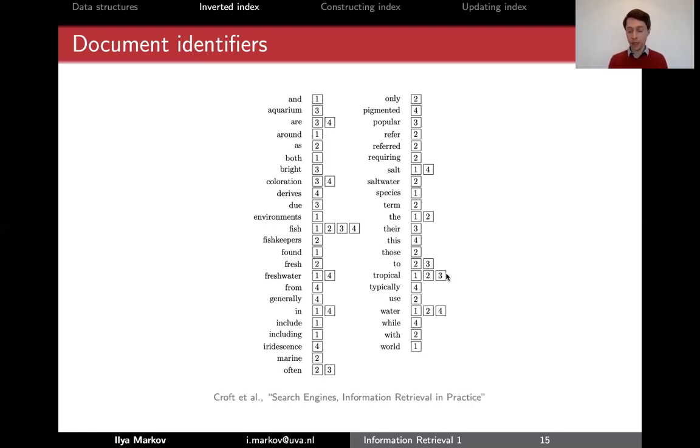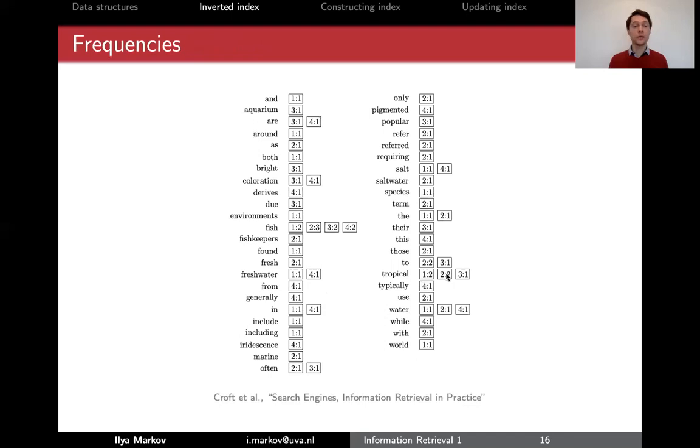So we need some more information and the natural information that we can store in the inverted index for each inverted list is the term frequency. So we not only store the document ID where the word occurs but also how many times the word occurs there. So fish occurs two times in document one, three times in document two, two times in document three, two times in document four. So now if we are to rank these documents we could for example go for a term frequency here and rank document two higher than other three documents.